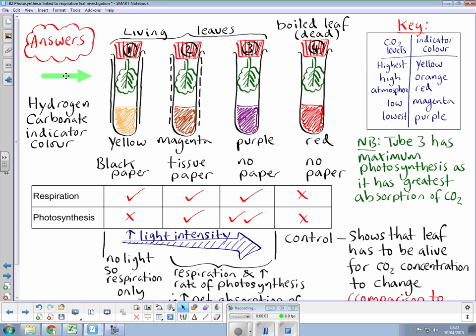Let's see if you got it right. As you can see here, respiration is occurring in the first three tubes, one, two, and three, and you can see that with the ticks across the bottom because all the leaves are living and all living things on this planet undergo respiration.